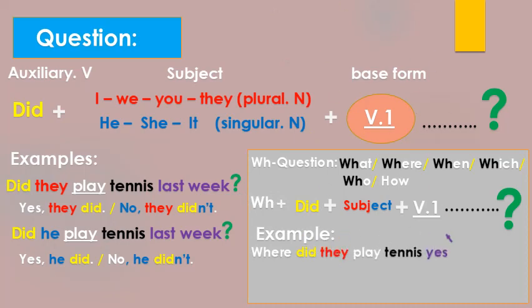Then the question mark, but at the beginning we add the wh word. So here we have an example: where did they play tennis yesterday? So here we need a full sentence. So the answer would be: they played tennis in the club.